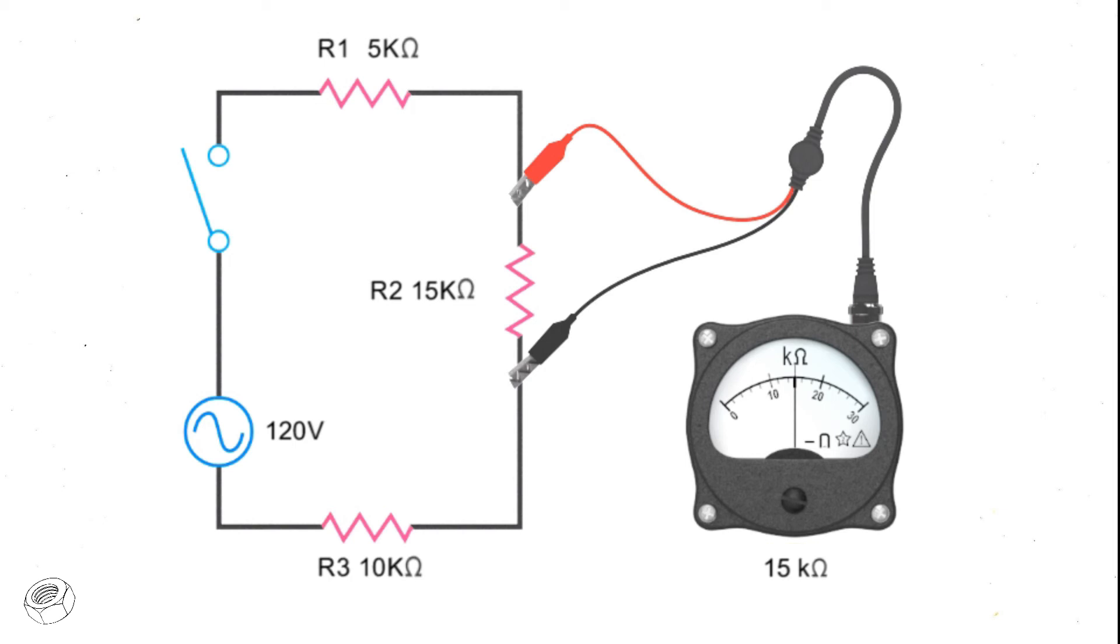To measure resistance, an ohmmeter has an internal voltage source which generates a small current that flows through the component being measured. The meter will automatically perform an Ohm's law calculation by dividing the voltage it applies by the current flowing, resulting in the resistance value.